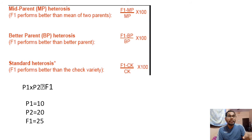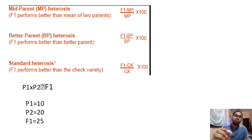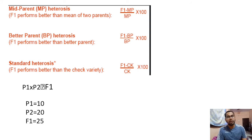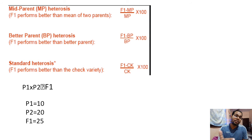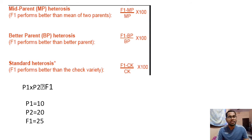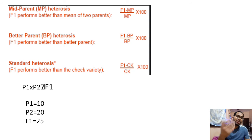Mean of mid-parent means you take the mean of P1 and P2. Suppose P1 parent mean is 10 and P2 parent mean is 20. So you take the mean of P1 and P2: that is 10 plus 20 divided by 2, which is 15. So you put 15 as the mid-parent value. For F1, you simply take the mean data of the F1 after crossing P1 and P2 parents.